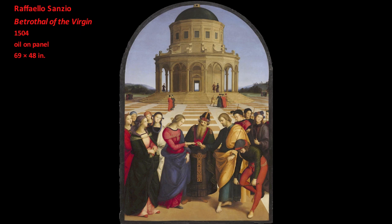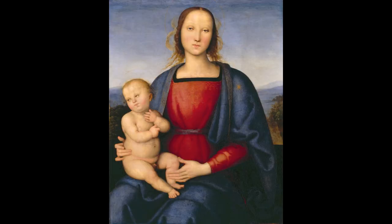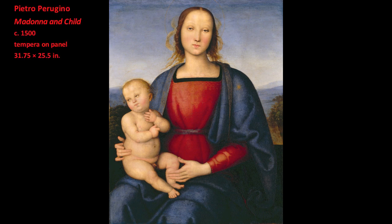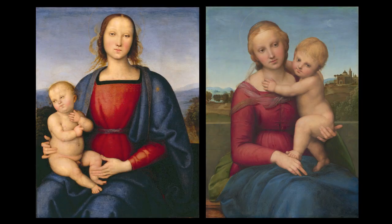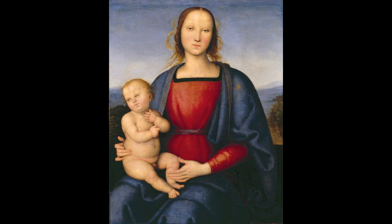Before relocating to Florence, Raphael had spent his youth in the humanist court of Urbino, and he had also been educated in the workshop of Pietro Perugino. Among the last generation of 15th century Italian artists, Perugino was one of the most innovative. If we compare Raphael's Madonna and Child with a painting by Perugino of the same subject, we can see how Raphael has adapted Perugino's graceful method.